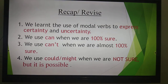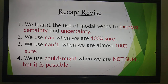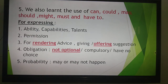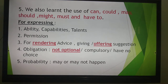For example, we can use 'can' when we are 100% sure. We use 'can't' when we are 100% sure that the thing is wrong. We use 'could' or 'might' when we are not sure but it is possible. We also learnt the use of can, could, may, should, might, must and have to for expressing ability, capabilities or talents — the things we can do.